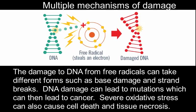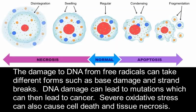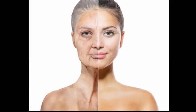The damage to DNA from free radicals can take different forms, such as base damage and strand breaks. DNA damage can lead to mutations, which can then lead to cancer. Severe oxidative stress can also cause cell death and tissue necrosis. Repeated exposure to free radicals that the body cannot stop increases the risk of diseases and premature aging.